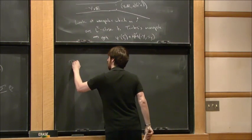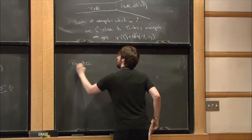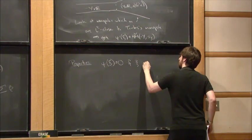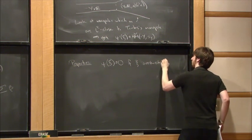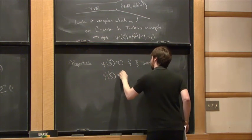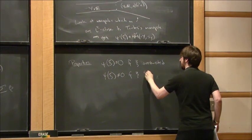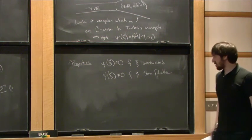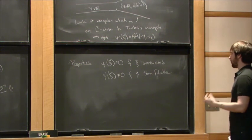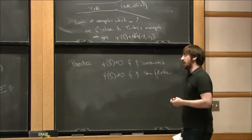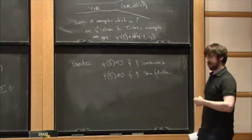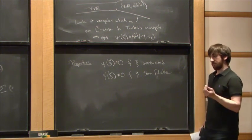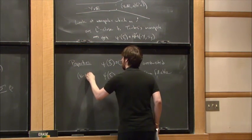The contact class has nice properties. It's zero if C is overtwisted. It's non-zero if C is Stein fillable, or more generally symplectically fillable. With twisted coefficients it's non-zero even for weakly symplectically fillable structures. This gives a proof — not using holomorphic curves — that weakly fillable implies tight for contact 3-manifolds. These properties are due to Kronheimer and Mrowka.